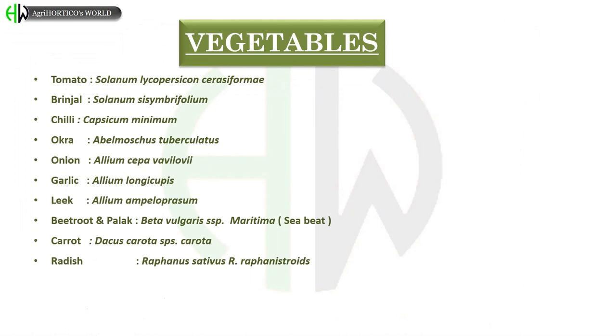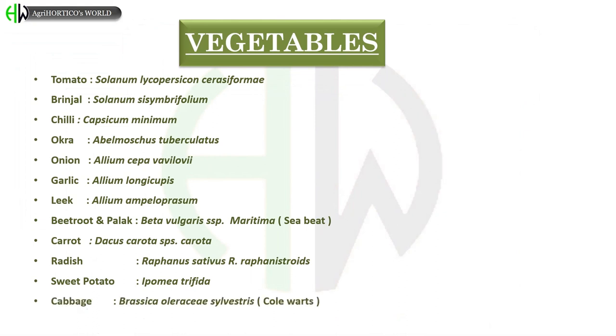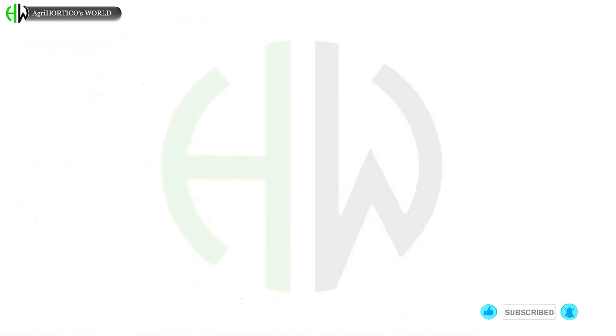Carrot – Daucus carota subspecies carota. Radish – Raphanus sativus subspecies raphanistrum. Sweet potato – Ipomoea trifida. Cabbage – Brassica oleracea sylvestris, also referred to as coleworts. Globe artichoke – Cynara cardunculus, also known as cardoon.